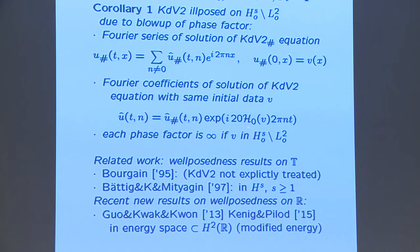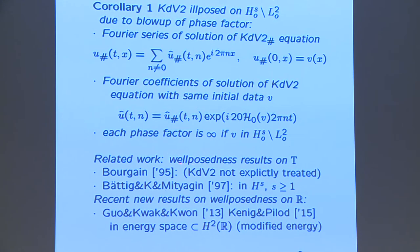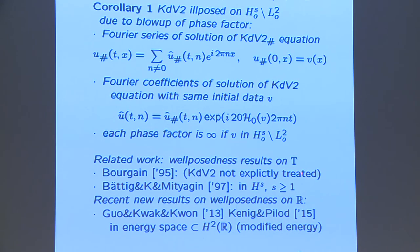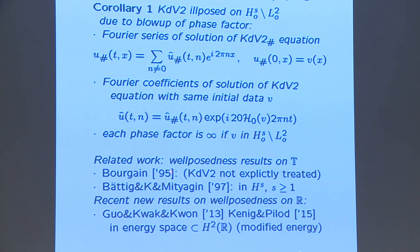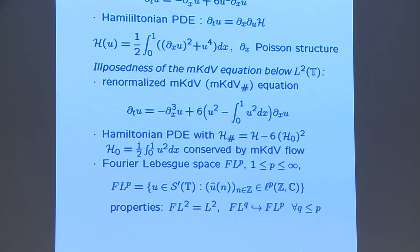These results improve on earlier results on well-posedness on the circle. There have not been so many results in the periodic case, but more recently many results on the line, in particular by Guo, Kuan, Koenig, and Pilo, who looked at solutions on the energy space contained in H2.